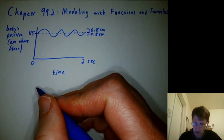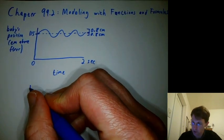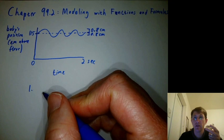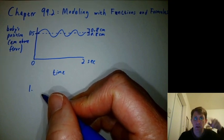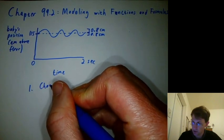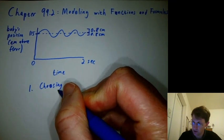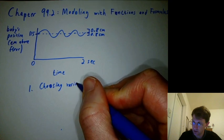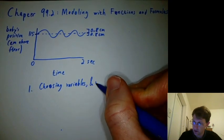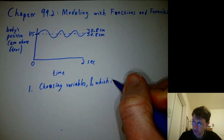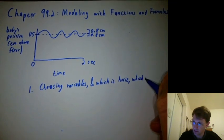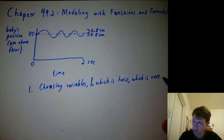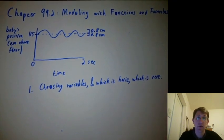There's a bunch of, well let's call it six steps. Step one is just choosing what your two variables are and which one is going to be the horizontal variable and which one is going to be the vertical variable. So choosing your variables, which is the horizontal variable and which is the vertical variable, because that can make a big difference in the kind of formulas you end up deciding on.